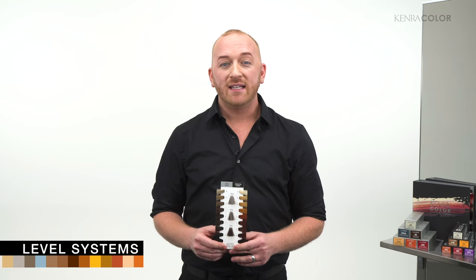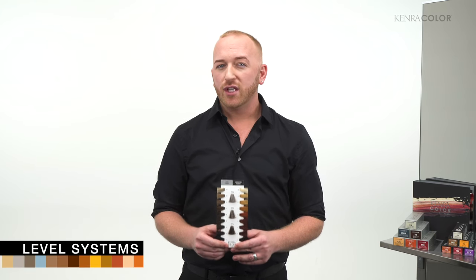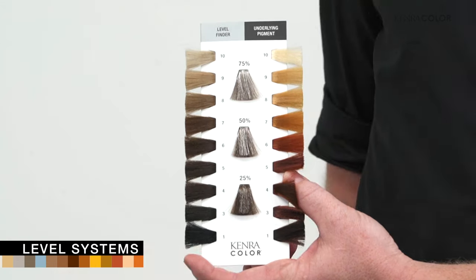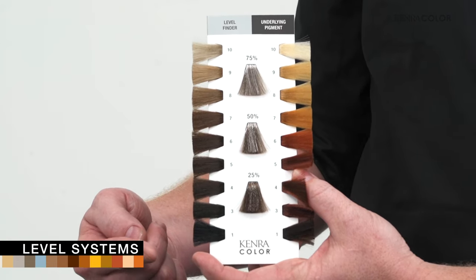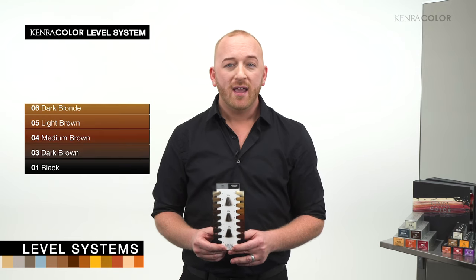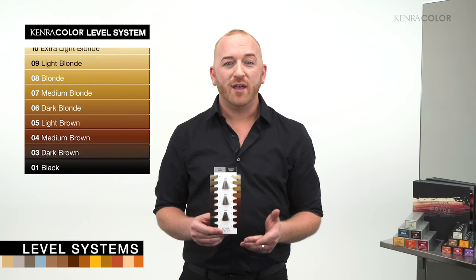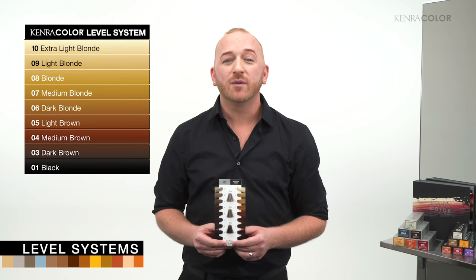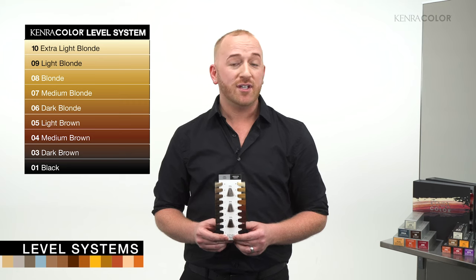This leads us to our next topics: the level system and underlying pigment. Level systems are used to describe the level of lightness or darkness in the hair, with lower levels being darker and higher levels meaning lighter. Kenra Color uses a level system from 1 to 10, with 1 being the darkest brown or black and 10 being the lightest pale blonde. We actually removed level 2 because it's indistinguishable to the human eye to differentiate below a 3.